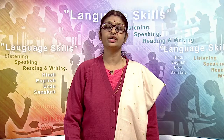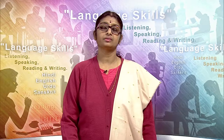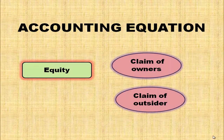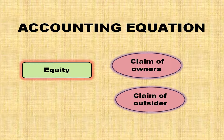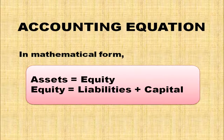An accounting equation expresses equality of assets on one side and equity on the other side. Equity can be the claim of owners or the claim of outsiders. In mathematical form, the accounting equation can be expressed as: Assets equals Equity.